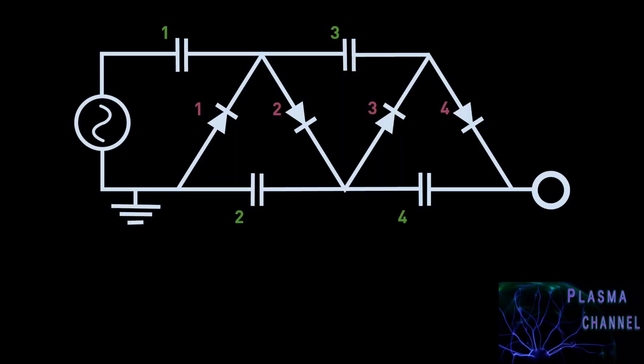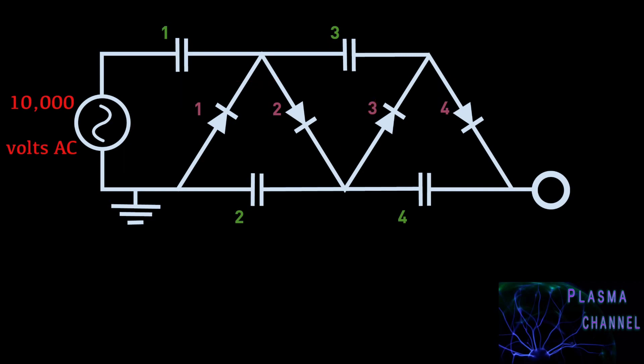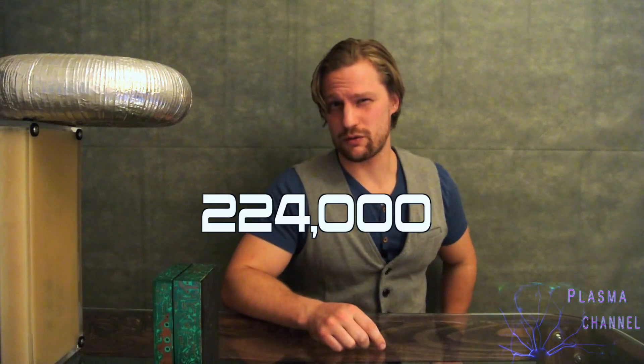So here's how these things work. You input a high voltage AC current, and on the first half of the cycle, it charges up capacitor 1. The second half of the cycle charges up capacitor 2, the third half charges capacitor 3, and so on. You can design this with as many stages as you want. The output voltage is the combined voltages of all those capacitors put together. In these devices, spark length is determined by voltage, which is entirely determined by your design — in the case of this unit, about 224,000 volts.